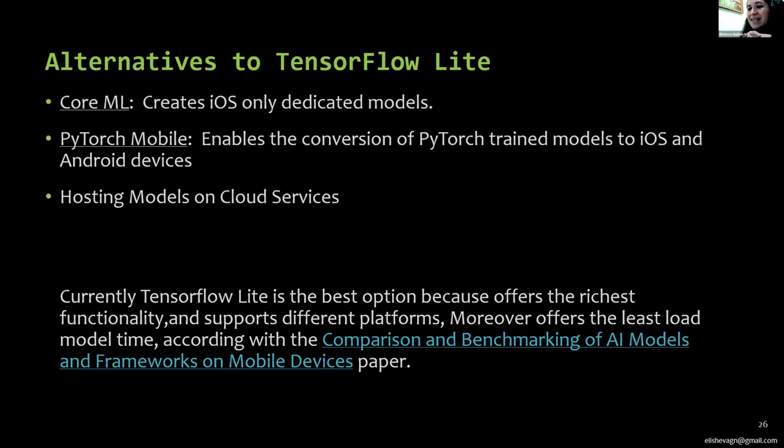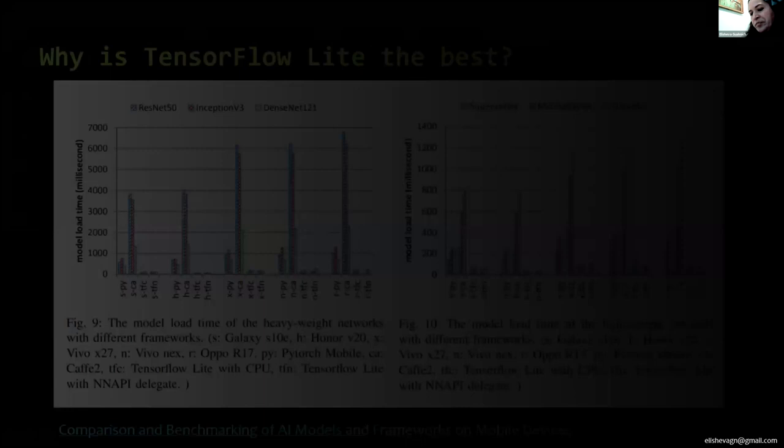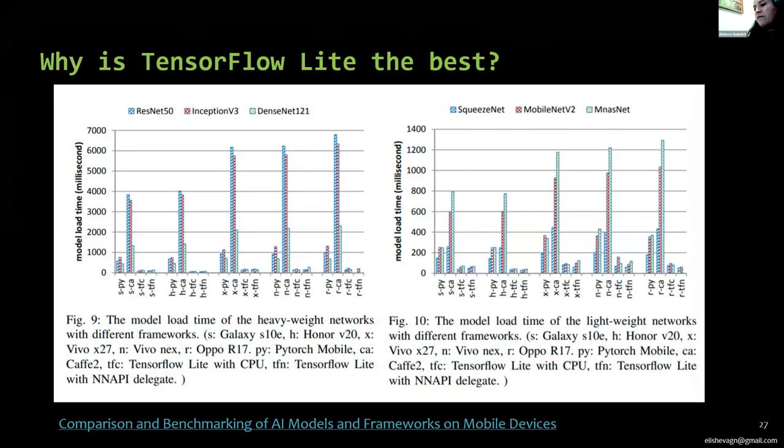What are the alternatives to TensorFlow Lite? Currently, TensorFlow Lite is the best option because it offers the richest functionality, supports different platforms, moreover offers the least load model time, and in most of the cases the best average inference, according with the comparison and benchmarking of AI models and frameworks on mobile devices. Here we have a nice chart and we see that the time for loading a model is the best. Why? Because it uses the flat buffer format.